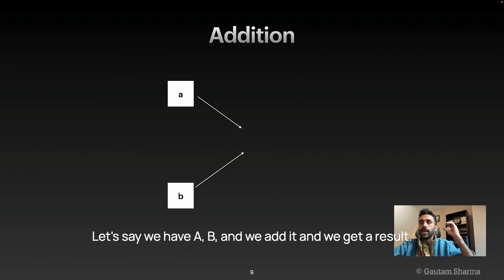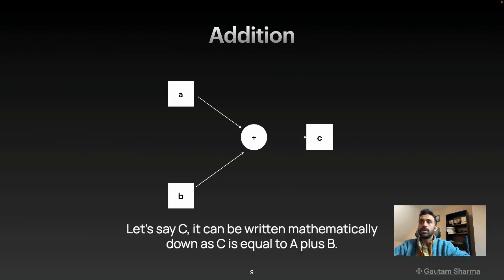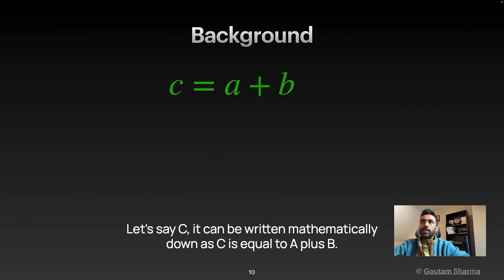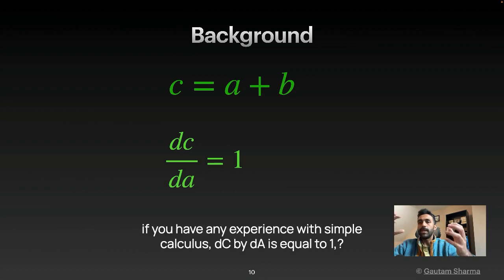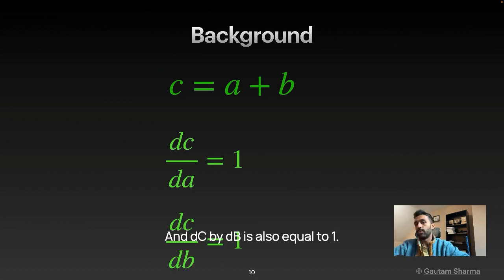I just gave an example of A plus B. Let's say we have A, B, and we add it, and we get a result, let's say C. With simple calculus, DC by DA is equal to one, and DC by DB is also equal to one.